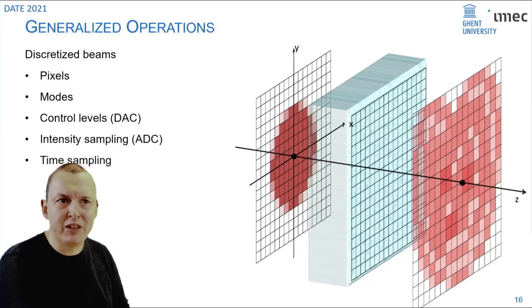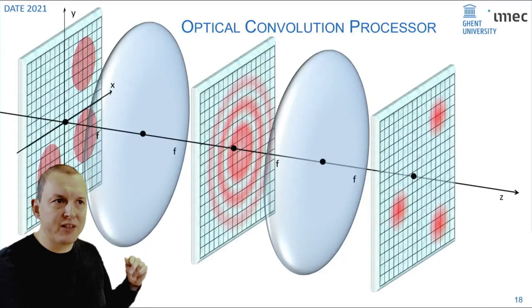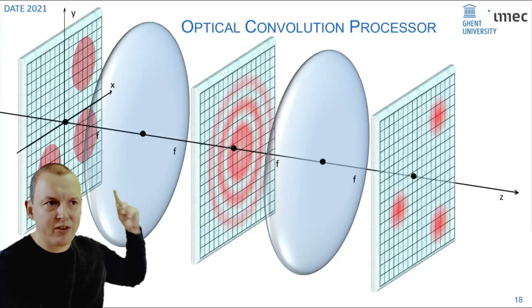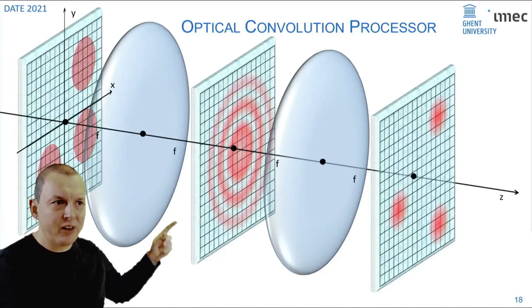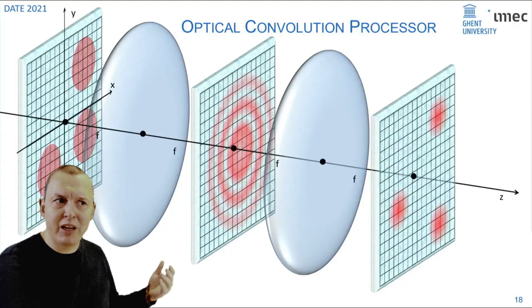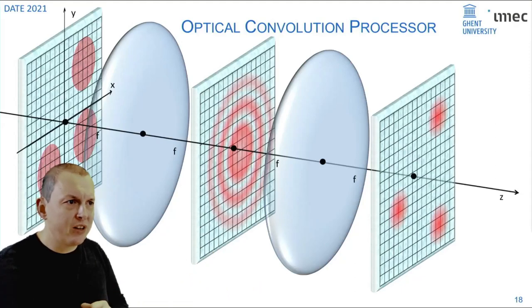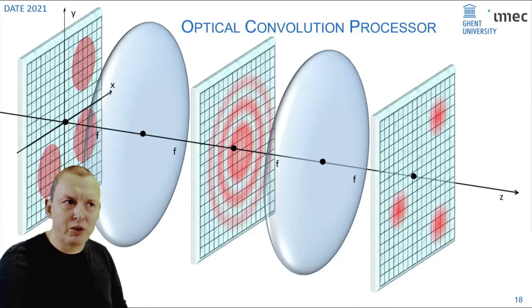A very simple example of such a processor is this one where you have a 4F system consisting of two lenses. You have a spatial light modulator in the input plane then one in the Fourier plane which contains the Fourier transform of the input which is then mixed with a pre-calculated kernel and then Fourier transformed again jointly into the output plane which gives you a convolution of the input with the kernel.